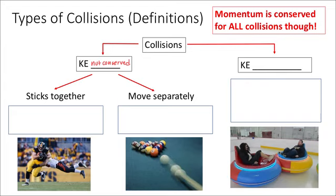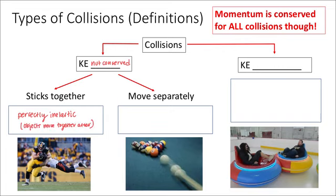Within collisions where kinetic energy is not conserved, there are two specific kinds. When two objects stick together, we call it perfectly inelastic — like a football player tackling another; after the collision, they travel together as one object. The other kind, simply called inelastic, is when kinetic energy is not conserved but the objects don't stick together. Billiards is a great example: you hear the sound of the balls, so kinetic energy isn't conserved, but they move off in separate directions.